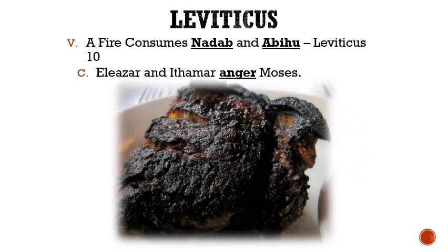Letter C: Eleazar and Ithamar anger Moses. Sometime after Nadab and Abihu's death, Moses told Eleazar and Ithamar, Aaron's other sons, to offer sacrifice for the people. But Moses got mad at them because the goat of the sin offering was burnt so badly by Nadab and Abihu that they could not even eat it. Thankfully, Aaron talked to Moses, and his anger was pacified.